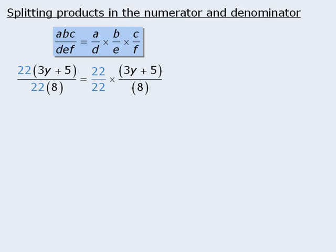And from here, we can recognize that since 22 over 22 simplifies to be 1, the 22's essentially disappear, leaving us with the simplified fraction 3y plus 5 over 8.